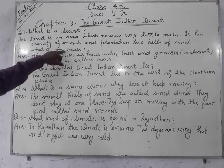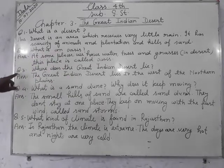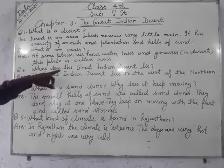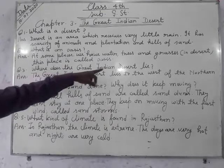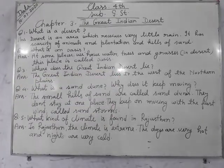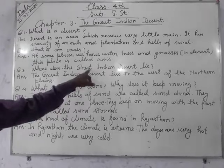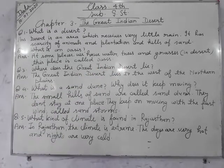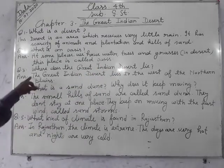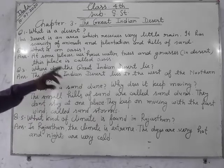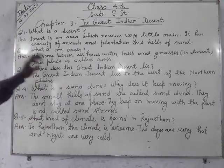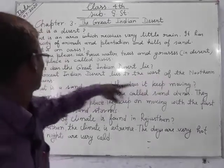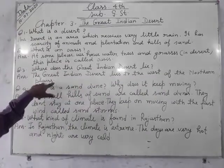Question three: Where does the Great Indian Desert lie? The Great Indian Desert lies to the west of the northern plains.